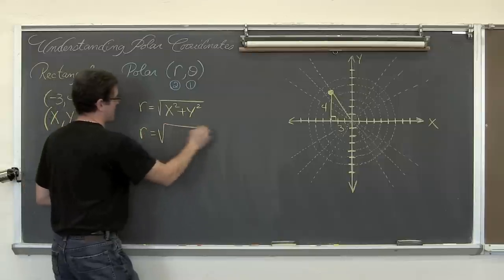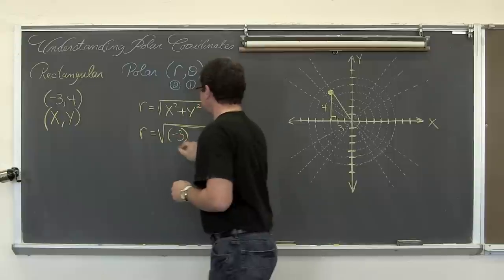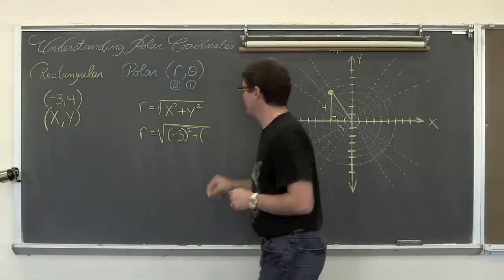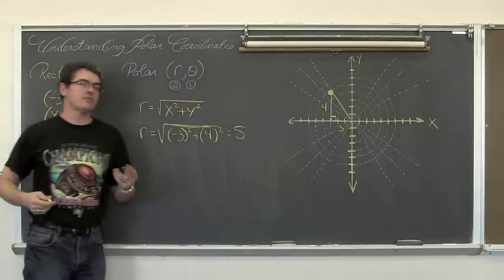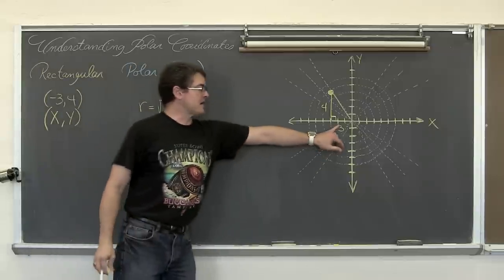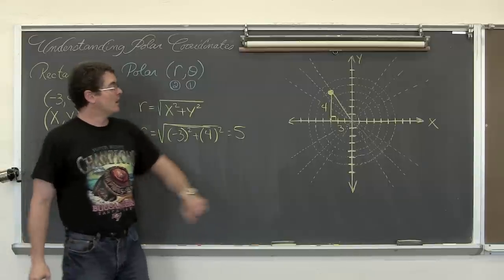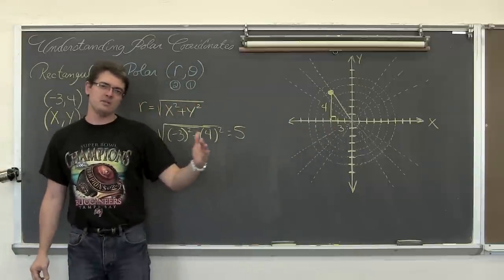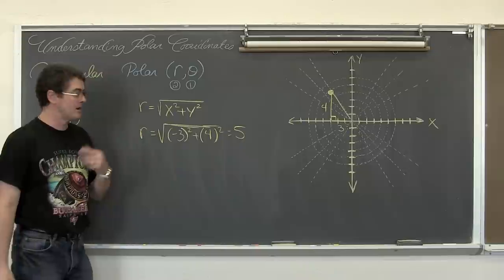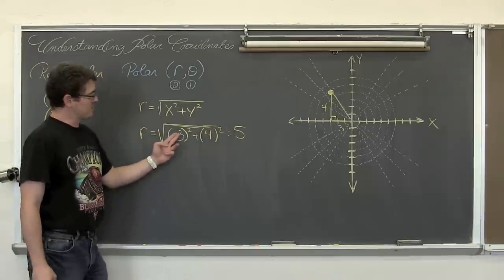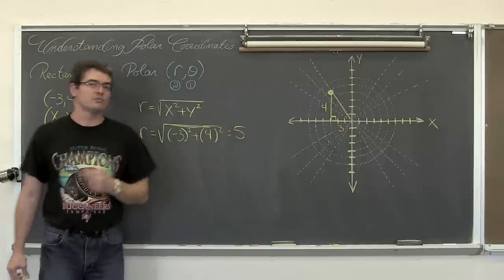So r is equal to the square root of the x coordinate, negative 3, squared plus the y coordinate of 4 squared. That comes out to 5 because we do have a 3-4-5 triangle. Now whether you have this side labeled as positive 3 or as negative 3 just to remind you that you went to the left — it is not going to matter, because you are still going to square that value and it will cancel out the negative sign. So the radius is fine whether you put a 3 or negative 3 in.